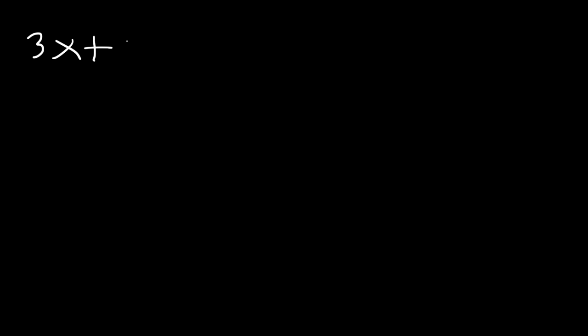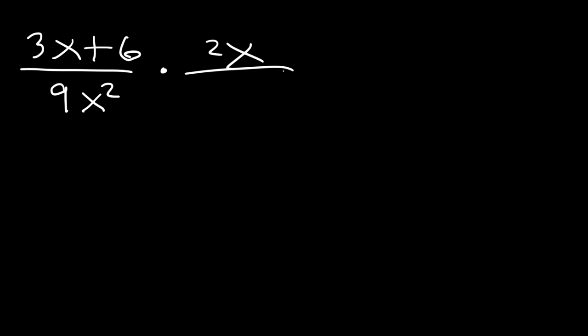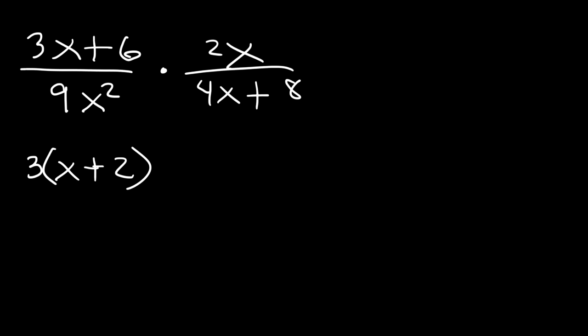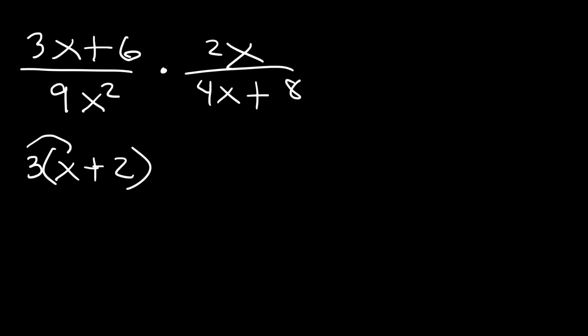Let's try this problem: (3x + 6) divided by 9x squared, multiplied by 2x divided by (4x + 8). For 3x + 6, we can factor out the GCF, which is 3, giving us 3 times (x + 2). 9x squared I'll factor as 3 times 3 times x times x. 2x stays as is. For 4x + 8, the GCF is 4, giving us 4 times (x + 2).